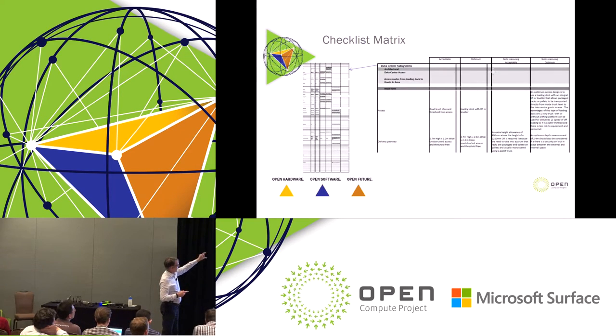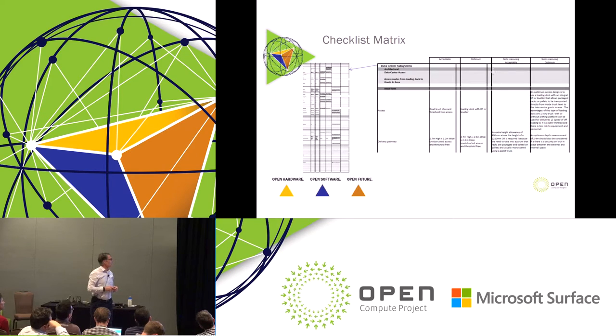This is the top section here with the must-haves here with the top. So you can see with the access, we've said it's acceptable to have road-level, step and threshold-free access, but an optimum arrangement would be having a loading dock with a lift or leveler, and then we've given some reasons why that's an optimum arrangement. We've tried to put some substance - it's not complete yet, we're still - this is still work in progress, but yeah, this is a starting point and this is where we are at the moment.